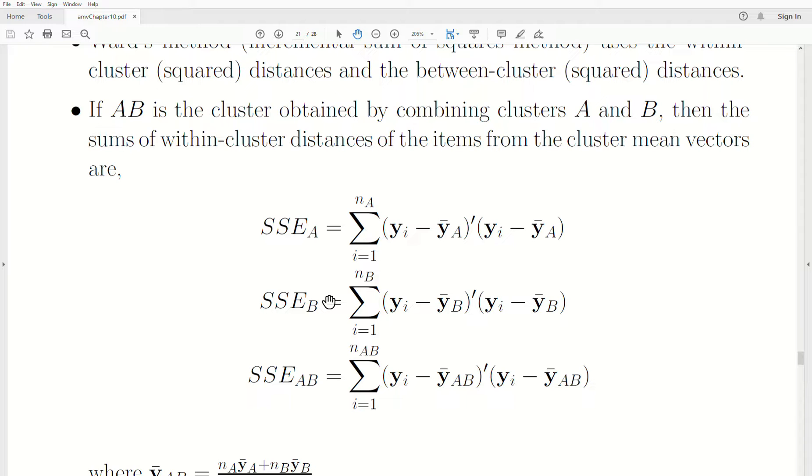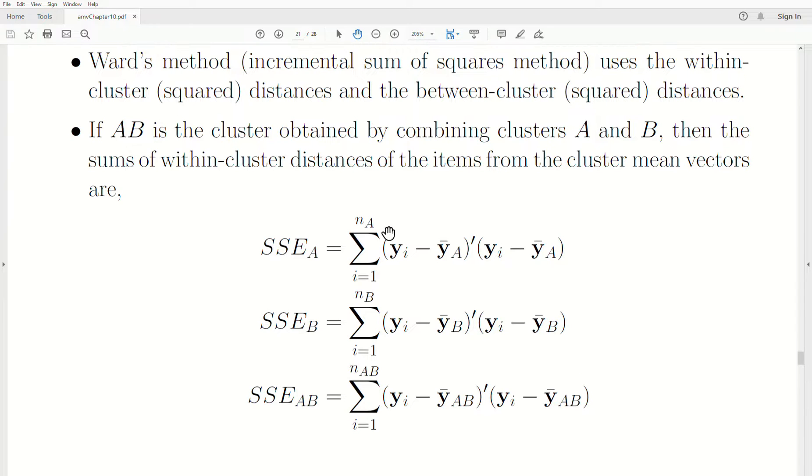So the sum of squares within for cluster A is SSE_A, the sum of squares within for B is SSE_B, and then the sum of squares error for the joined clusters is SSE_AB.